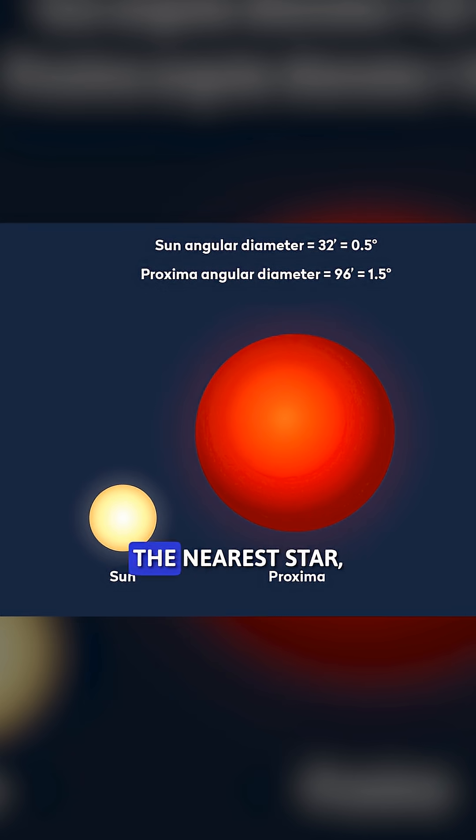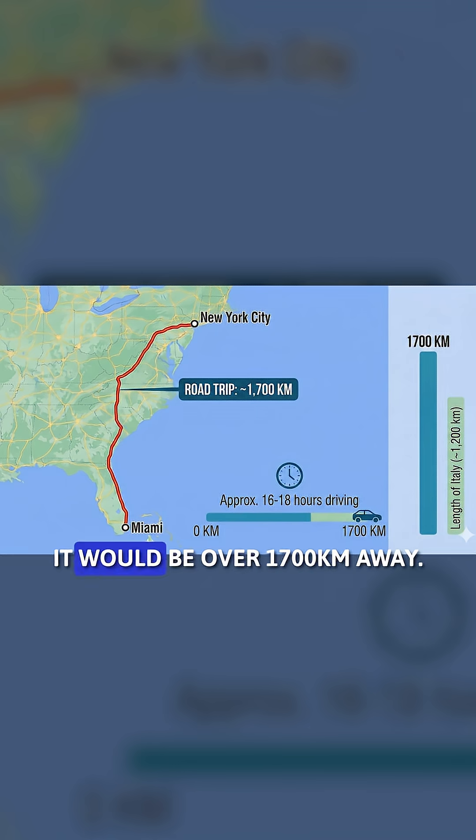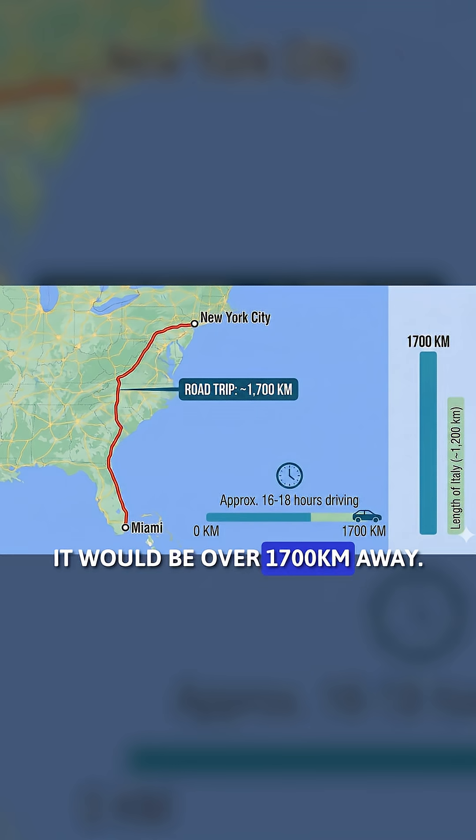But here's the crazy part. The nearest star, Proxima Centauri, in this scale, it would be over 1,700 kilometers away. That's like placing your apple Earth in Delhi and the next star is all the way in Dubai.